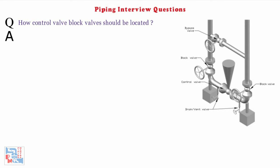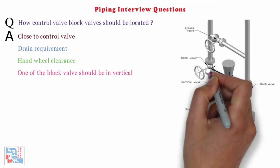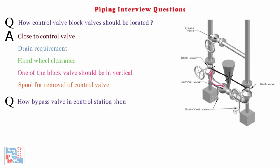Next: how should control valve block valves be located? They should be as close to the control valve as possible, considering drain requirement and handling clearance. At least one of the block valves should be placed in vertical orientation so that the spool can be removed, allowing the control valve to be removed.